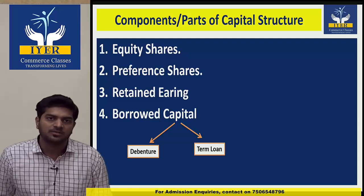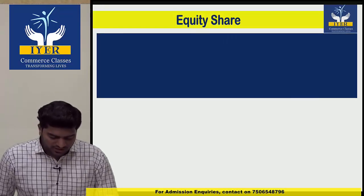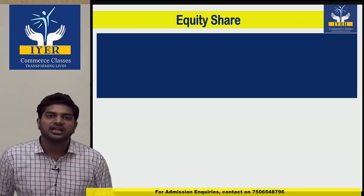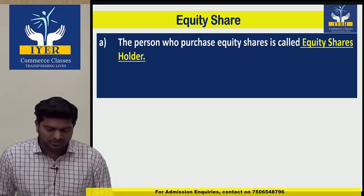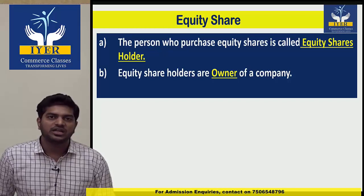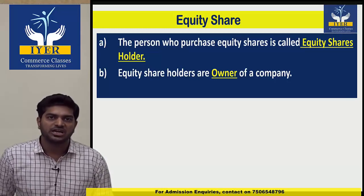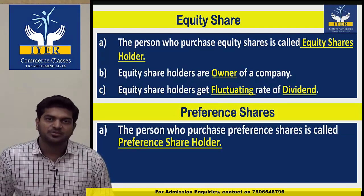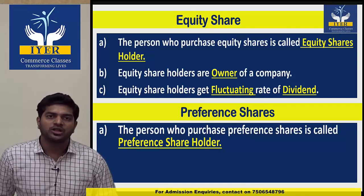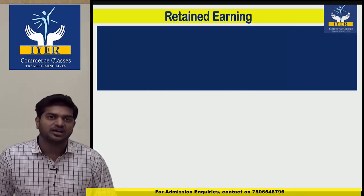Some necessary information on components: Equity share — every company compulsorily issues equity shares to increase ownership. Three key points: the person who purchases equity shares is called an equity shareholder; equity shareholders are owners of a company; and they get a fluctuating rate of dividend — not a fixed rate of dividend.